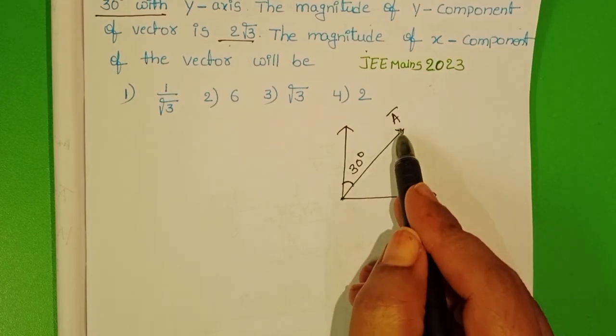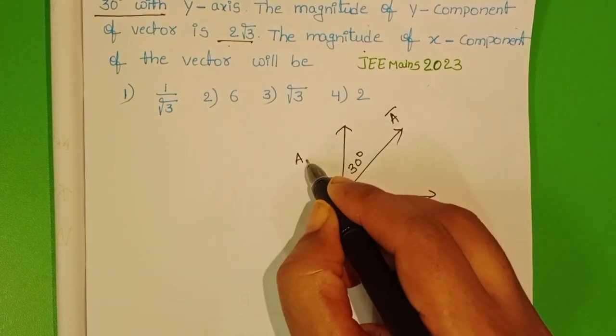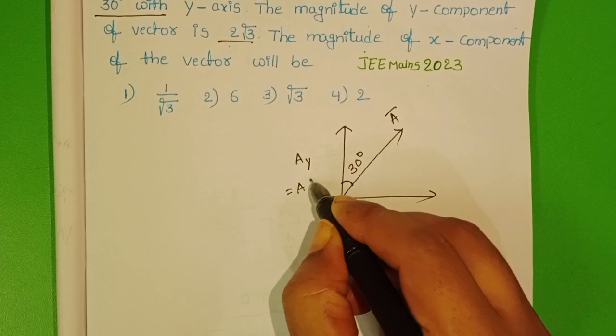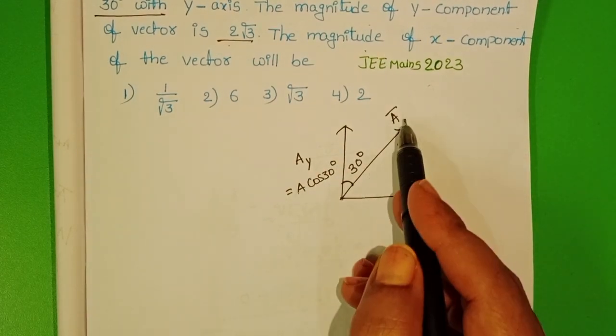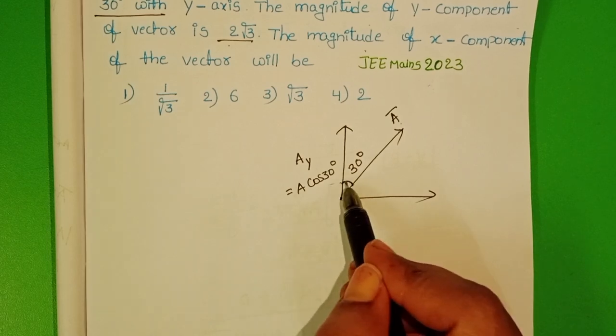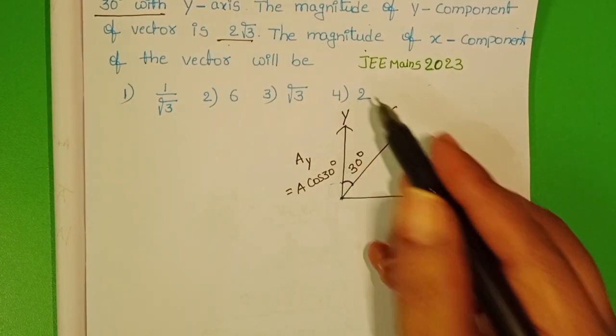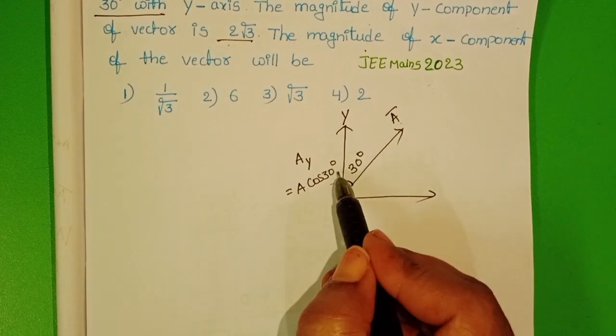The component of the given vector along Y direction is AY. We know AY equals A cos 30 degrees, because A makes an angle of 30 degrees with the Y-axis. So along this direction, the component of the vector is A cos theta.